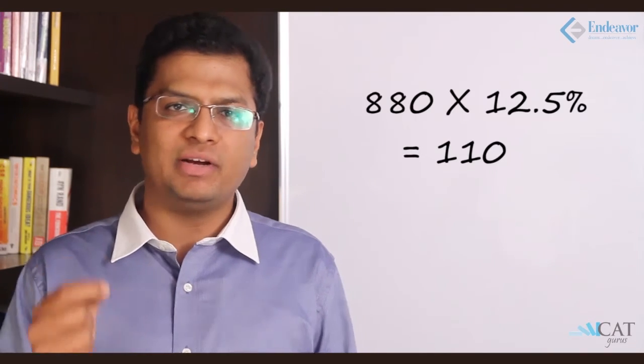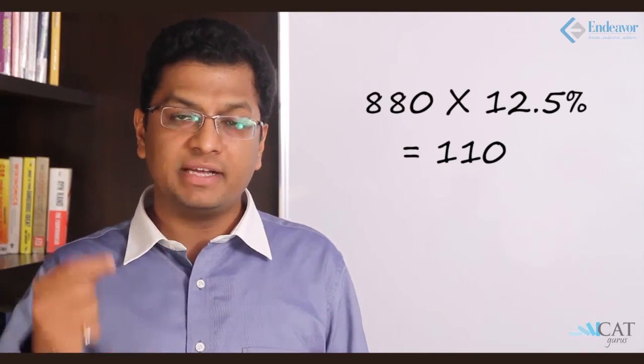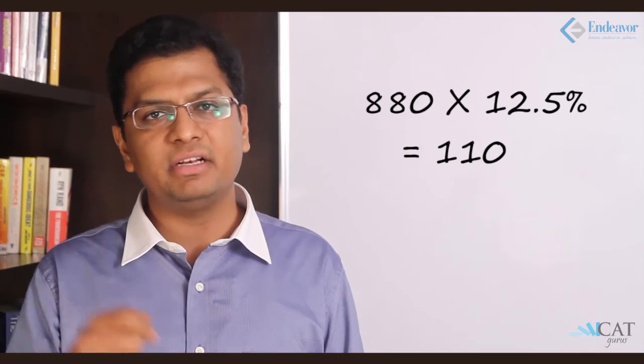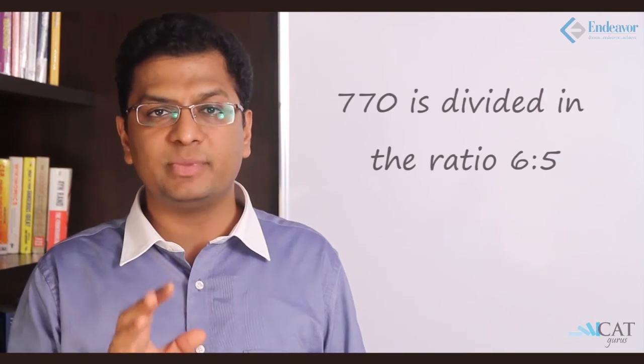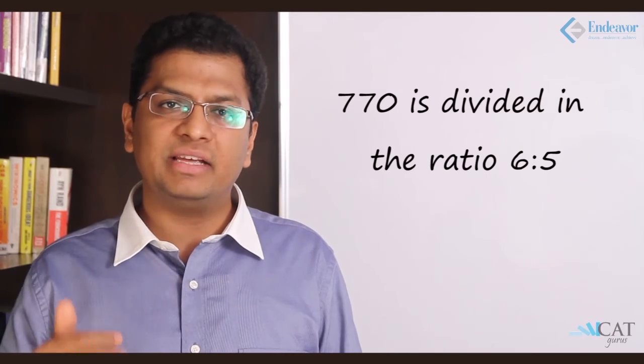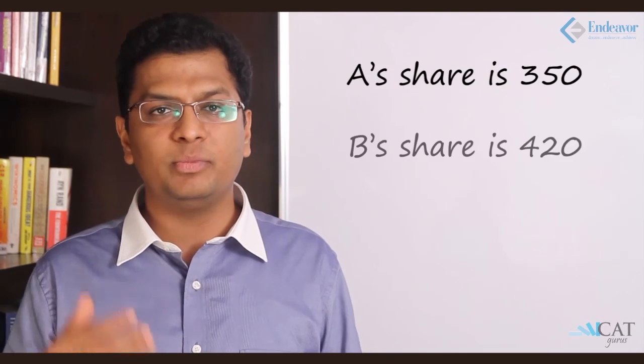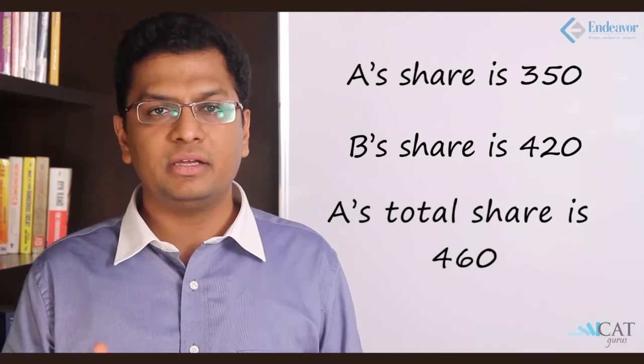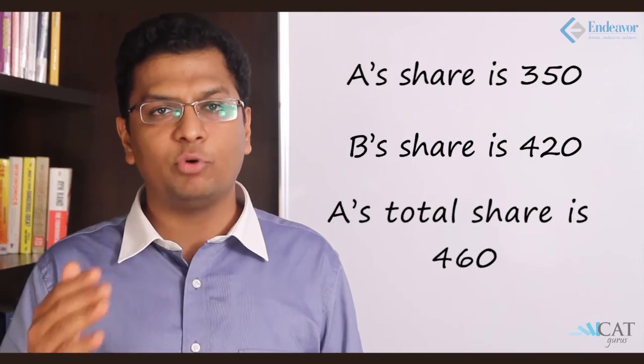Let us remove A's managing share. So 880 multiplied by 12.5%. Now 12.5% is 1/8. So 1/8 into 880 will give me 110. Removing this 110, we get the proper share, which is 770. Now 770 has to be divided into 2 parts: 5000 and 6000. Reducing them, we get 5:6, so that is a total of 11. A's share is 350 and B's share is 420. So the total share of A here is 350 plus 110, which is Rs. 460. This is how partnership and averages can be dealt with very easily.